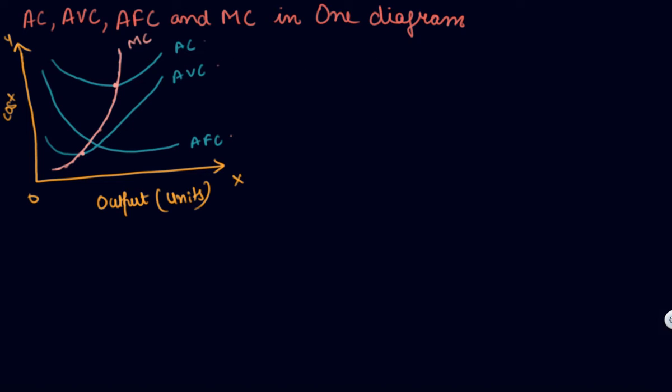The first relationship is that your MC curve should cut both AC and AVC at their lowest points. This is one thing you have to make very clear in this diagram: the lowest point of AVC is here, so MC is cutting at its lowest point.